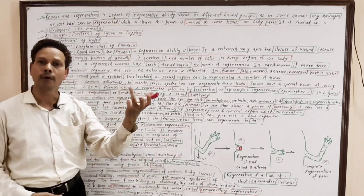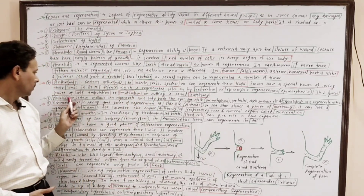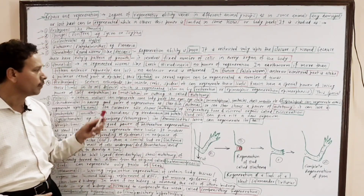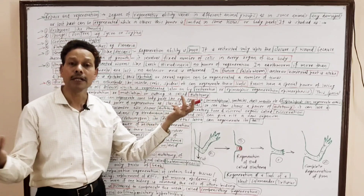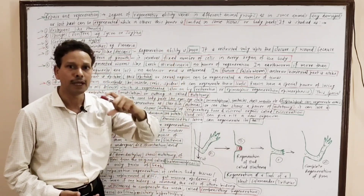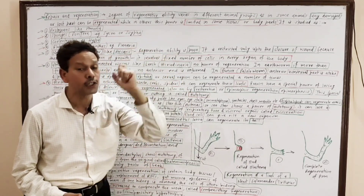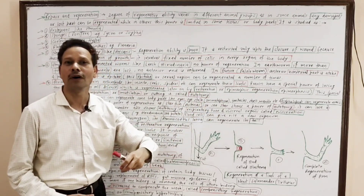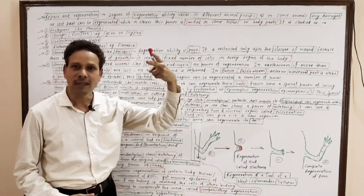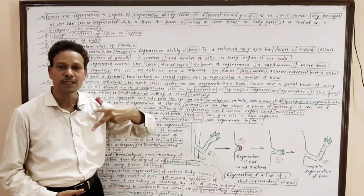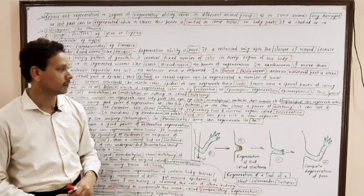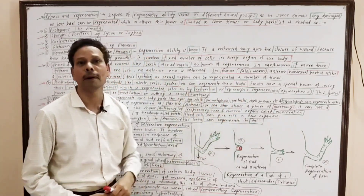In soft-bodied animals like snails (mollusks), regeneration power is limited to certain body parts. The eye can be regenerated. In mollusks like snails (Pila), the eye is a simple ommatidium present on a small eye stalk called an ommatophore. Both the ommatidium and the ommatophore can be regenerated.